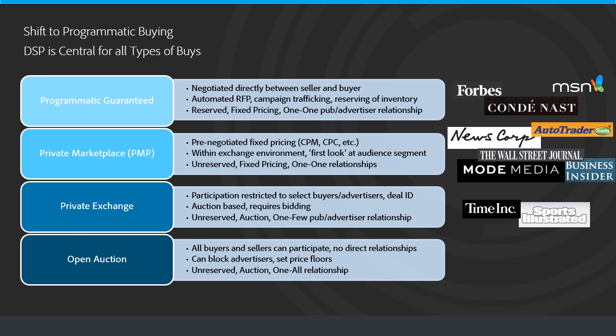The last type is open auction. This is the most common way today that a DSP enables buying of display. All buyers and sellers participate — it's an open auction like the New York Stock Exchange, except display inventory is bought and sold instead of stocks. There are no direct relationships, although publishers can in some cases block advertisers or set floor prices. The inventory is non-guaranteed or unreserved, and it's a one-to-all publisher-to-advertiser relationship.